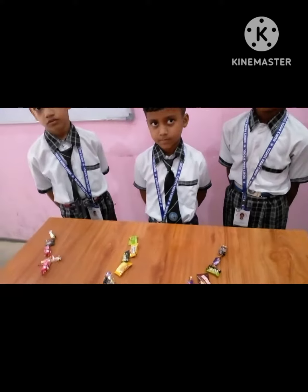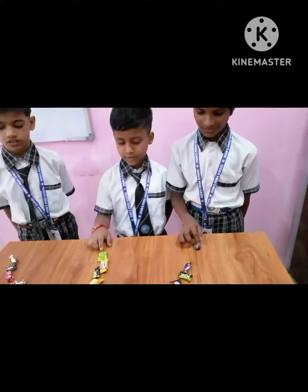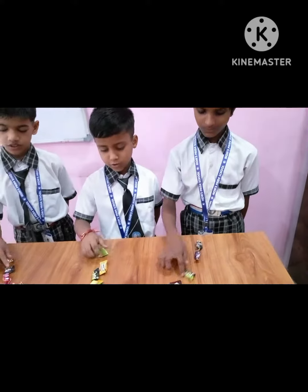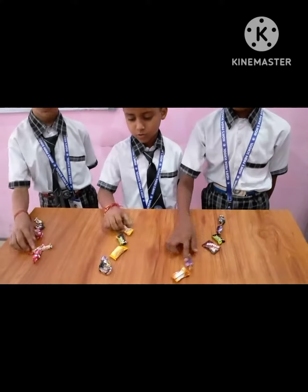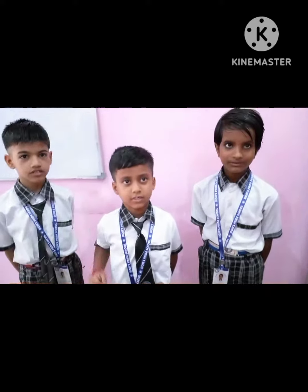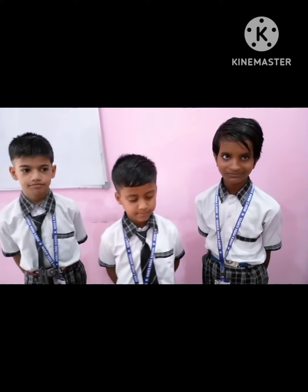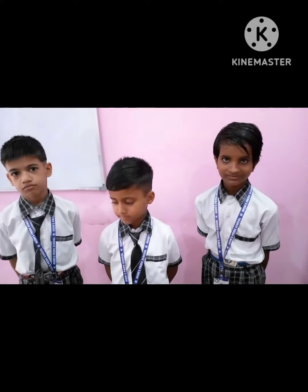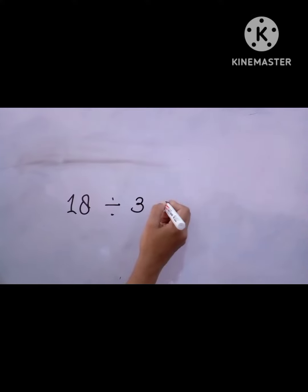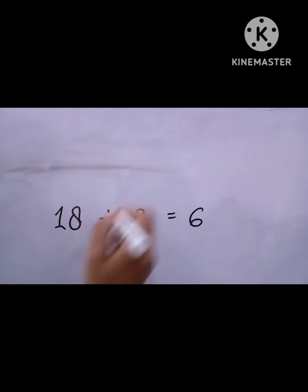Okay students, count your toffees. How many toffees are you getting? Six toffees. So the division fact will be: 18 divided by 3 is equal to 6.